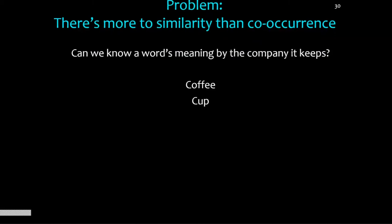Coffee and cup have very related meaning but they're actually very distinct things. Good and evil definitely hang out a lot together but they don't have similar meanings — in fact they have meanings about as different as you can get; they're antonyms. And there are words that hang out with slightly unexpected neighbors: in Tom Mitchell's study, the action verb that 'carrot' co-occurs with most frequently is not 'eat' but actually 'approach' — because of the phrase 'a carrot and stick approach.' So the way words hang out with each other doesn't necessarily capture what the word actually means. There's a little bit more to meaning than co-occurrence.